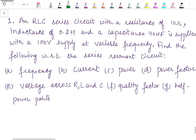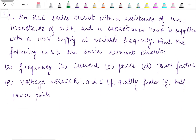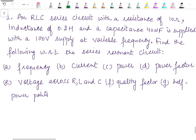The first problem says an RLC series circuit with a resistance of 10 ohm, inductance 0.2 henry, and a capacitance of 40 microfarad is supplied with a 100 volt supply at variable frequency. So resistance is 10 ohm, inductance is 0.2 henry, capacitance is 40 microfarad, voltage is 100 volts, and frequency is variable.